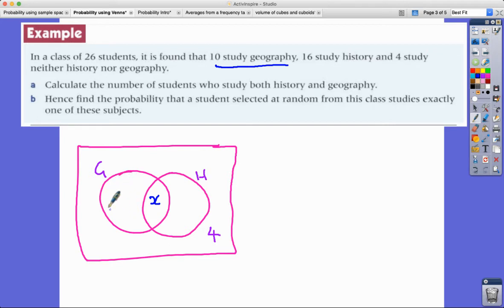Now if I know that in this circle here for geography, 10 students study geography, I've already got X accounted for here. What would be an expression that would go in here to make the whole thing add up to 10? Well I've already got X, this would have to be 10 subtract X. Same thing goes over here. So I've got 16 students that study history and so the expression that's going to go in here would have to be 16 minus X.